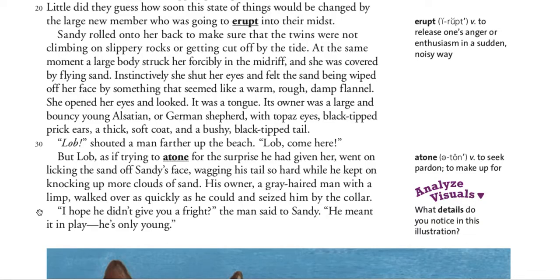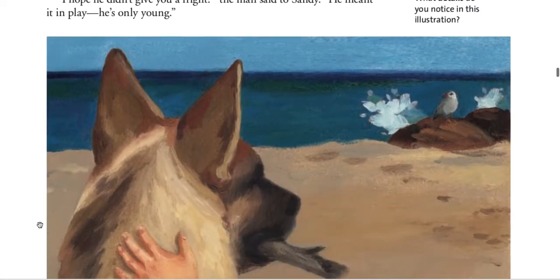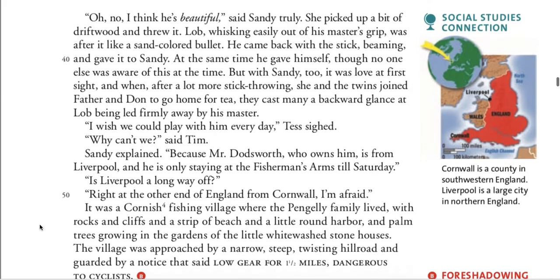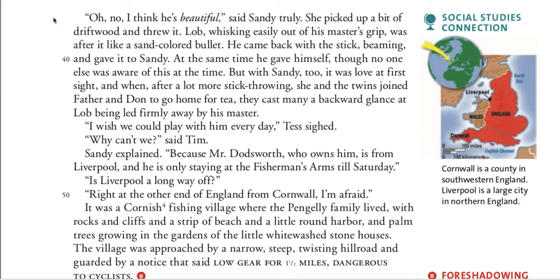'I hope he didn't give you a fright,' the man said to Sandy. 'He meant it in play. He's only young.' Here we can see Lob on the beach. 'Oh, I think he's beautiful,' said Sandy truly. She picked up a bit of driftwood and threw it. Lob, whisking easily out of his master's grip, was after it like a sand-colored bullet. He came back with the stick beaming and gave it to Sandy. At the same time, he gave himself — though no one else was aware of this at the time.